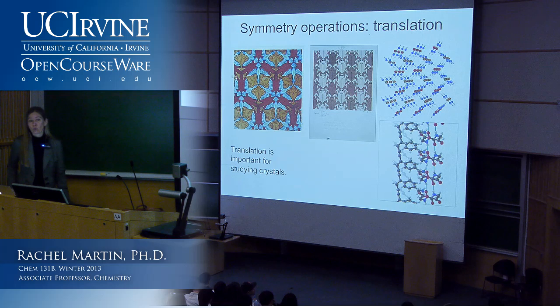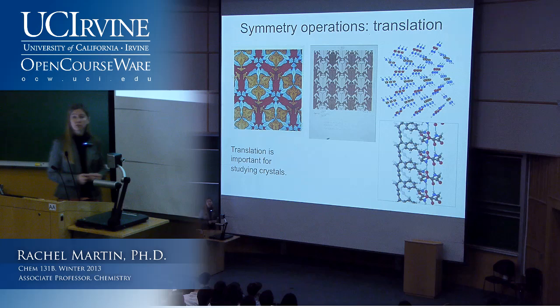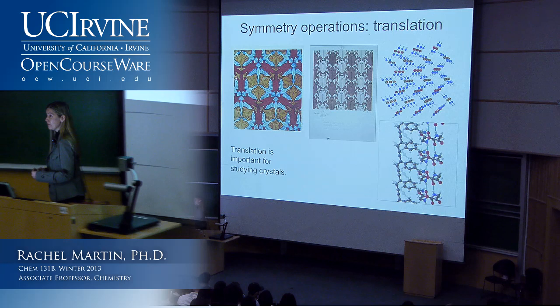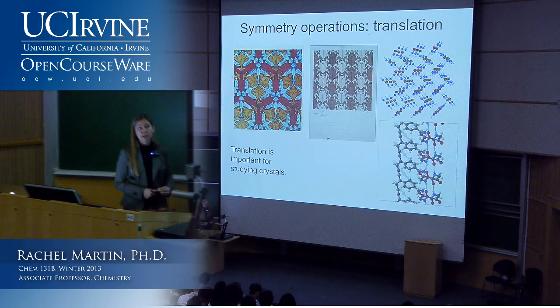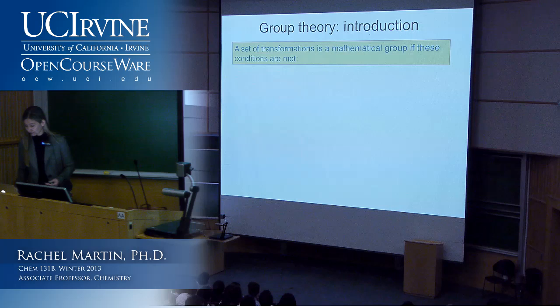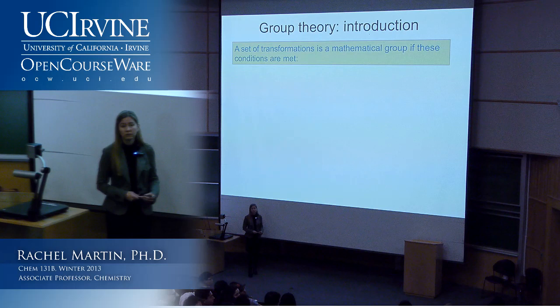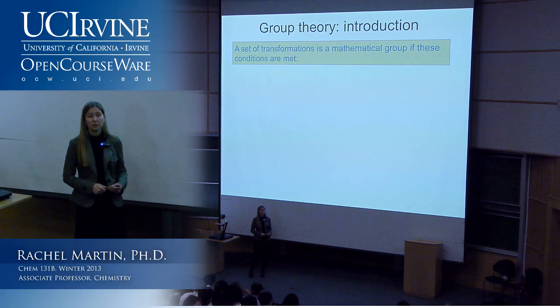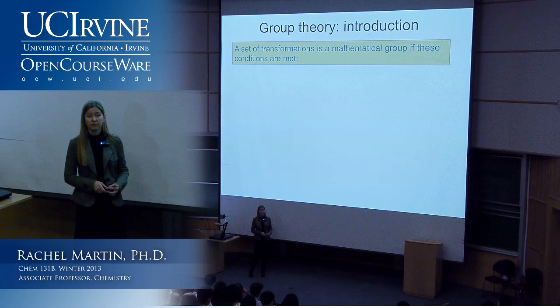That's the introduction to what symmetry elements and symmetry operations are—all of those that we need to worry about. Now let's start getting into how to use them and the formal representation of these things. Regarding methane: it doesn't have a C4 rotation axis—its principal rotation axis is C3. But the improper rotation S4 involves rotating 90 degrees, which is 360 over 4. It can have an S4 axis without having a C4 axis, and that is the hardest one to visualize—it's going to take some practice.